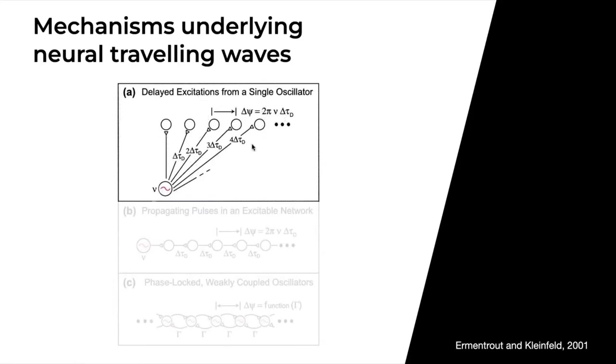In this first mechanism, called delayed excitations from a single oscillator, we have one self-oscillating entity that successively excites these entities on top here by increasing time delays. This results in something called an apparent wave, which is usually not considered a real wave, but it does produce the phenomenon of a wave. The phase shift between these entities can be described with this simple formula: delta psi is equal to 2 pi times nu, the oscillation frequency, times delta tau d, the time delay. This mechanism has been shown to be the driver of current discharges along the length of electric eel.